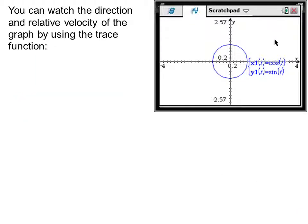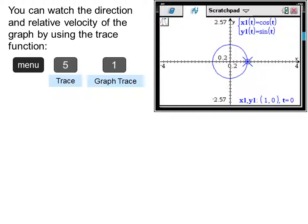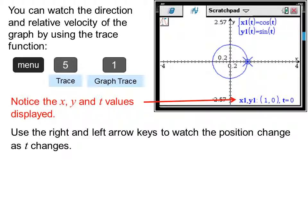And the calculator squares up the graph. You can watch the direction and velocity of the graph by using the trace function. Press menu, five, trace, one, graph trace, and then we can follow the trace around the circle. Notice the x, y, and t values are displayed.